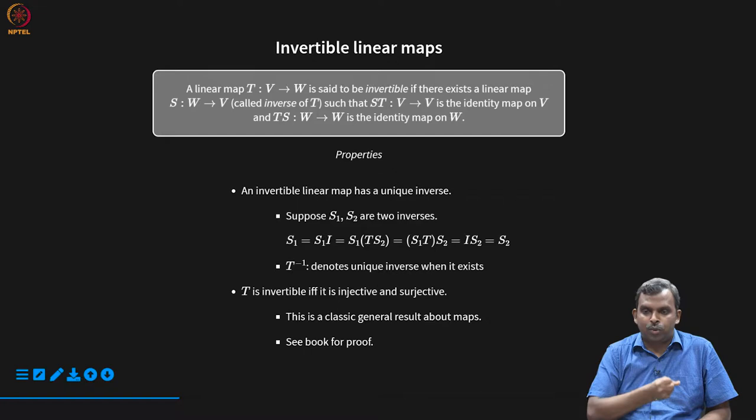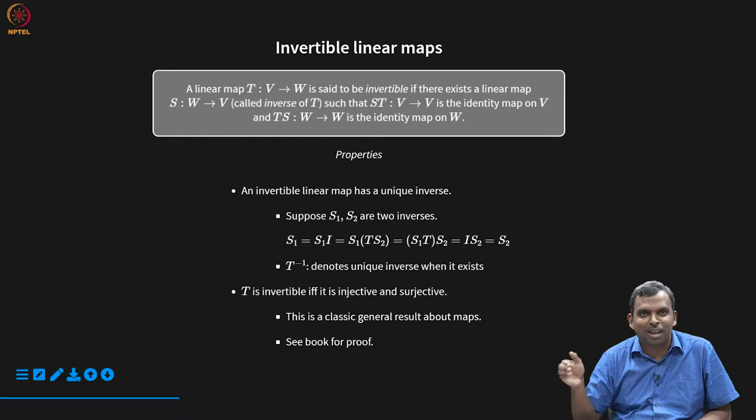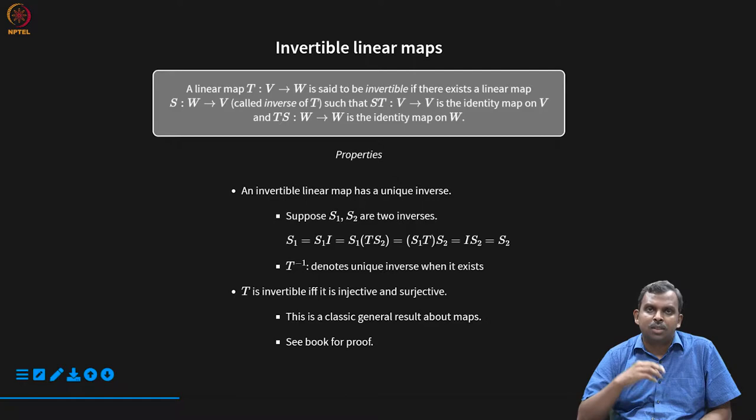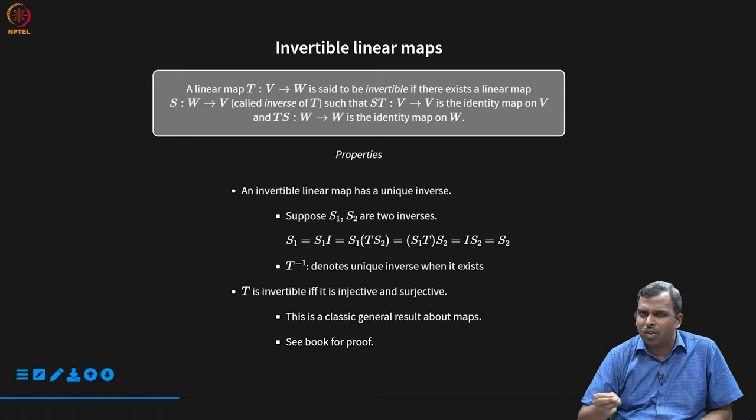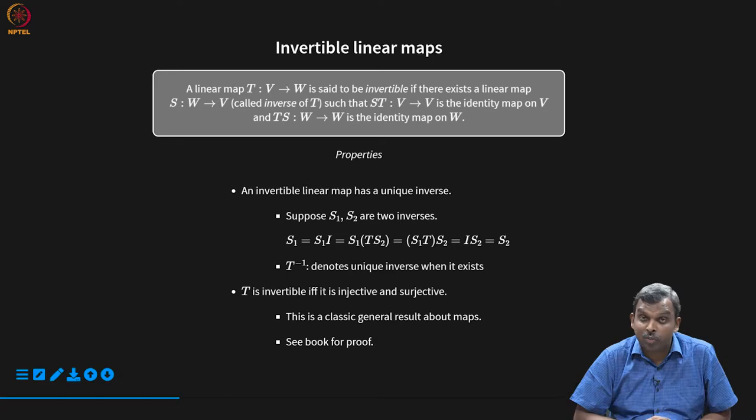When do we say a linear map is invertible? The definition is not very hard. When you talk of a function being invertible, the function takes input to output. If there is another function which can take you from output to input in a proper, faithful way, then you have an invertible function. That is the basic idea: you should have a clear, precise, correct way of coming back from the output to the input. Given an output, you should be able to uniquely find what input it corresponded to.